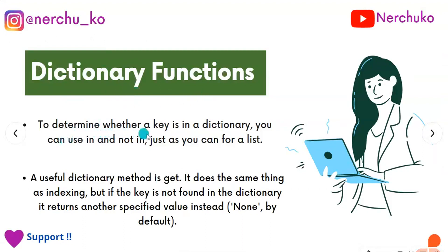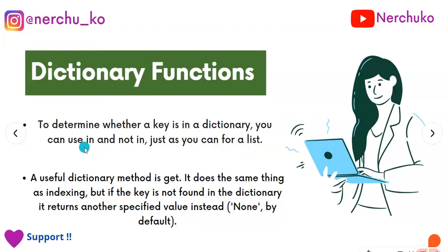To check whether a key is in a dictionary, you can use 'in' and 'not in', just as you can for a list. If you want to check membership in a dictionary, you can use these operators.